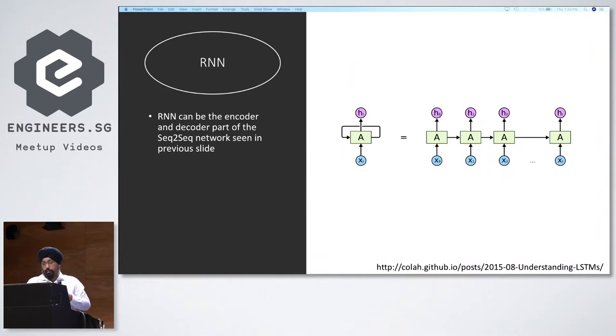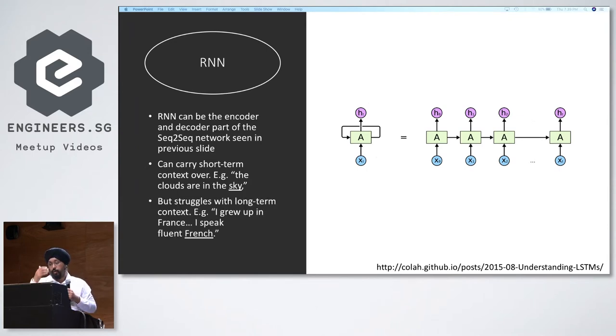This RNN can be used on the encoder and the decoder side at both ends of a sequence-to-sequence model. It can carry over short-term context. You have a sentence like 'the clouds are in the sky', so it can essentially hold the knowledge of something which has come before in recent past. But where it fails is if you have a longer context where you had a bigger sentence. It can't remember a lot of history in the past. There's a link in the bottom, a very good blog where you can learn about sequence-to-sequence and RNN.